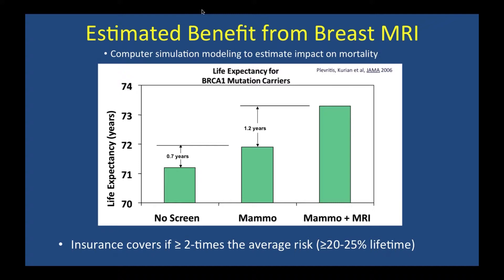Research from Stanford used simulation modeling to estimate the benefit of breast MRI screening in addition to mammogram for a woman with a BRCA1 mutation. Without any screening, a woman with BRCA1 might have an average life expectancy of around 71 years. Adding mammogram might increase that by about 0.7 years on average, while adding MRI nearly doubles that benefit to about 1.2 years. These are averages, not individual predictions, but this underlies insurance guidelines covering breast MRI when a woman's breast cancer risk is estimated at two times the average or higher.